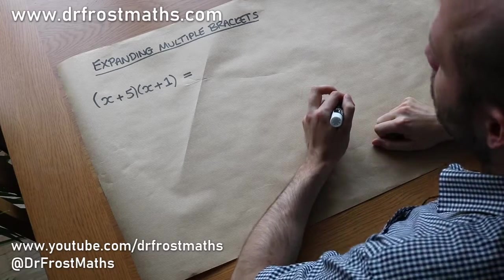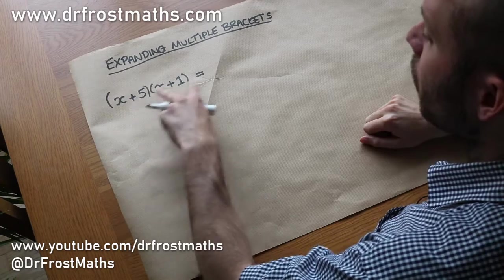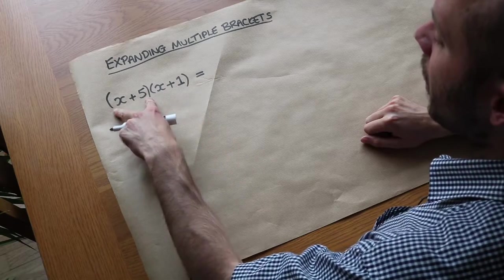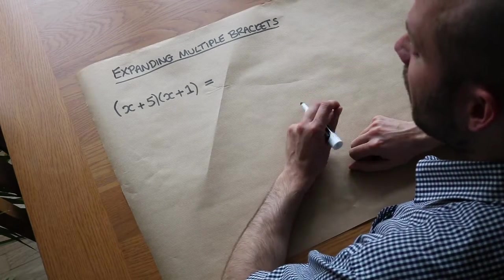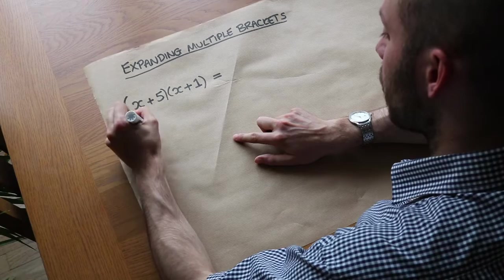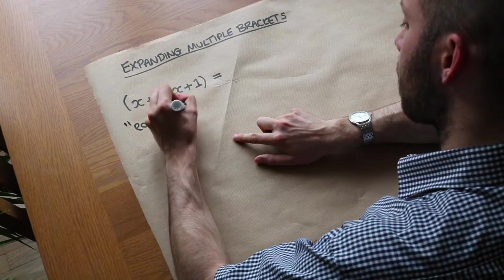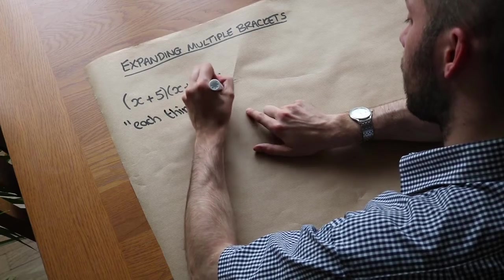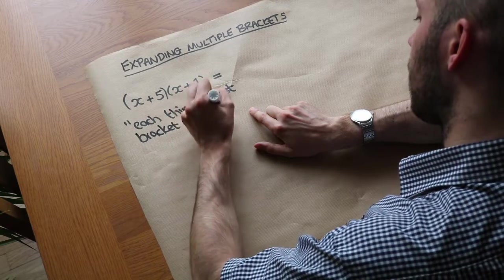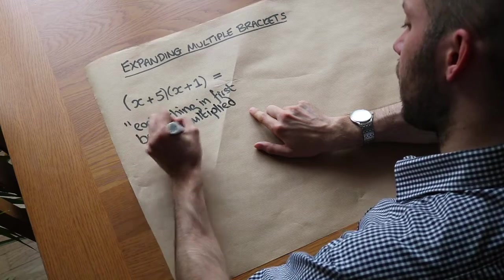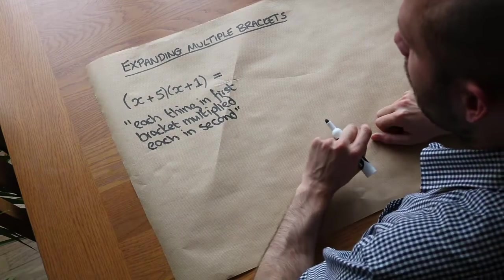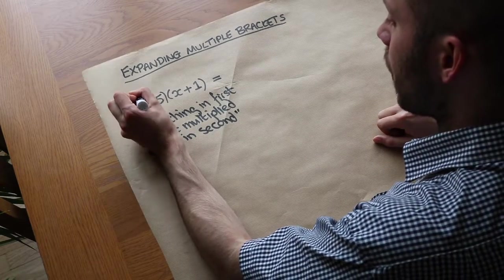In this video we're going to see how we can expand multiple brackets — when we have two bracketed expressions and we want to multiply them together. In algebra, when we have two things next to each other it means we're multiplying them. The way we do it is to have each thing in the first bracket multiplied by each thing in the second, so we want all combinations where we choose one thing from each bracket.